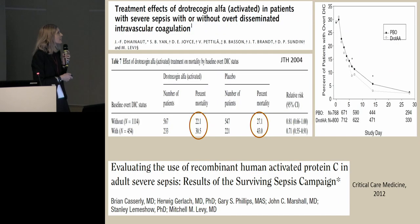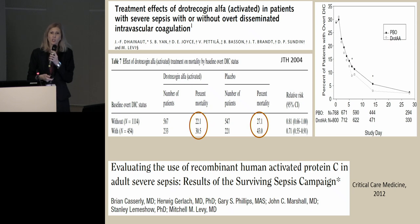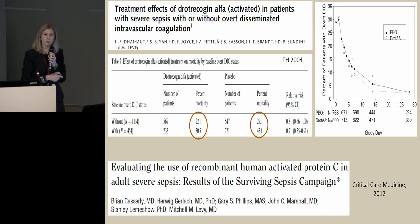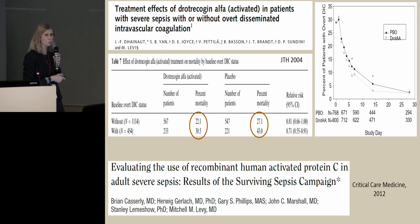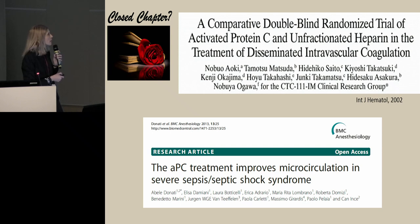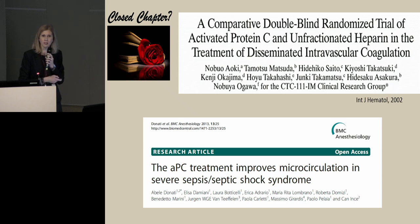Until 2012, when the PROWESS-SHOCK study was published — including patients with septic shock — the same benefit in mortality was not found; on the contrary, increased bleeding risk was found. After 2012, the manufacturer decided to withdraw the drug from the market. However, subsequent studies showed that by selecting only patients with sepsis-induced DIC, mortality was even more decreased compared to the whole septic group, and activated protein C was shown to improve microcirculation and resolution of DIC compared to heparin.